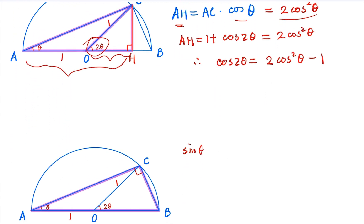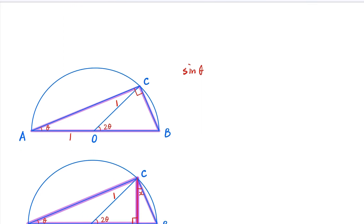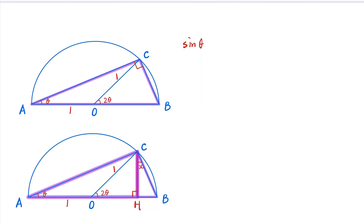Sine 2θ can be proved in a similar fashion with easier steps. Now, again, in the bigger triangle, we have, by definition, sine θ is BC over AB.